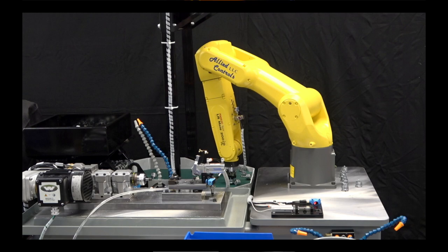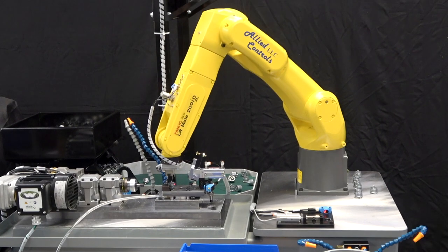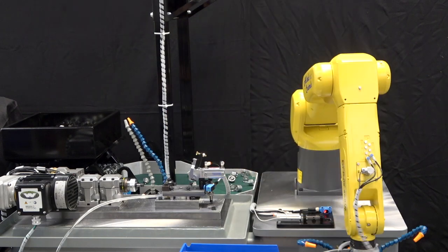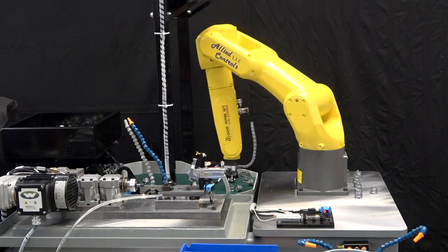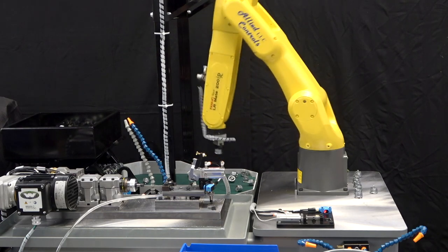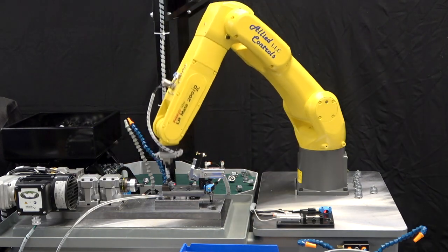Allied Controls is a FANUC authorized systems integrator in Union, Missouri. For this project, Allied has integrated a FANUC LRM8-200ID-7L robot to prepare parts for the Husky Corporation. These parts are used in fuel pump handles.